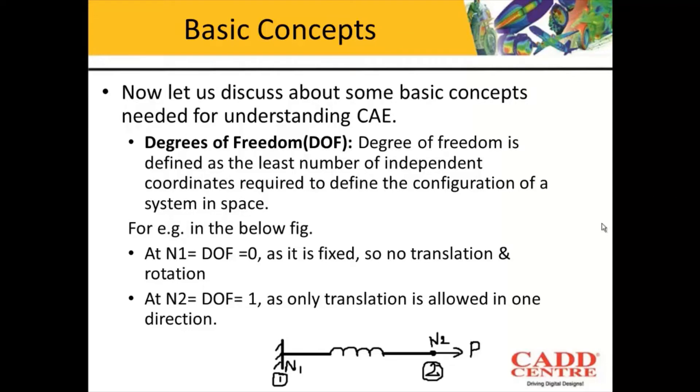For example, in the below figure, at node number one, the degrees of freedom available is zero. That means it is completely fixed, so no translation or rotation is allowed. Similarly, at N2, DOF equals one, as only translation in the x direction is allowed. This figure demonstrates the meaning of degrees of freedom.